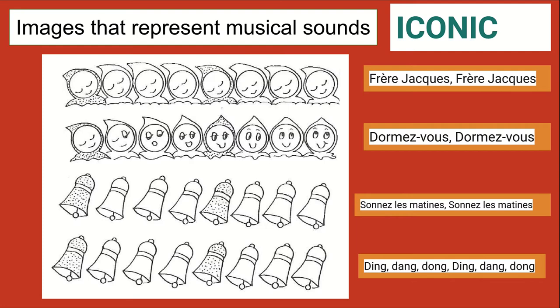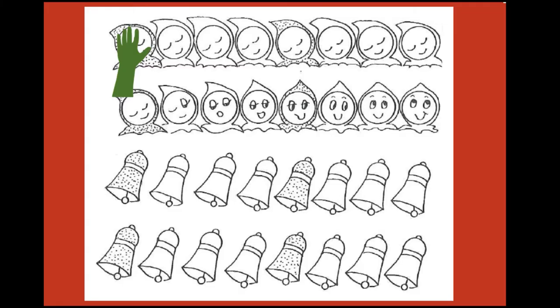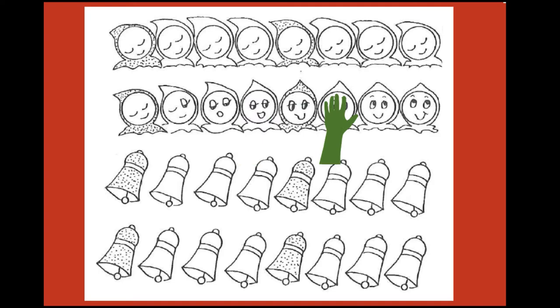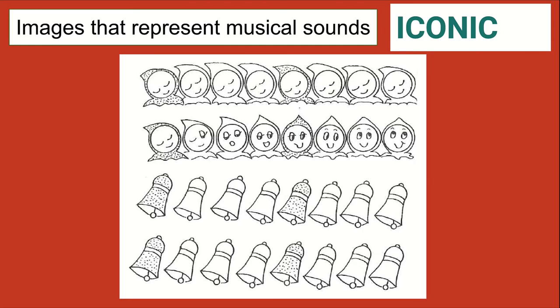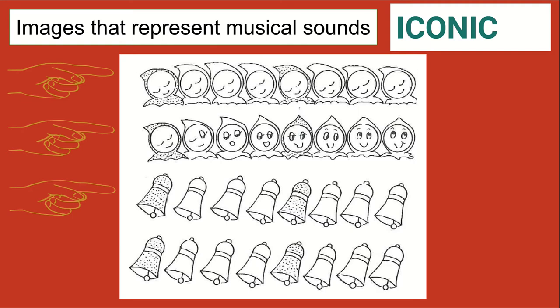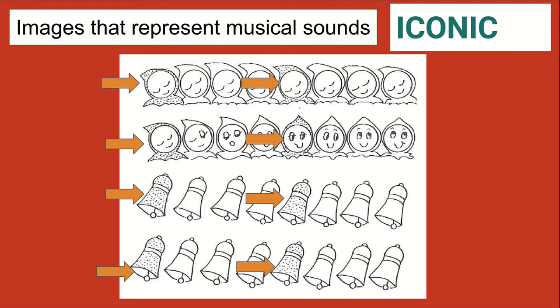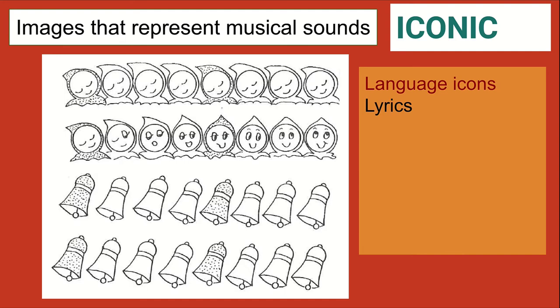What music concepts are represented by this song? You might have noticed there's an image for each beat of the song — Frère Jacques, Frère Jacques, dormez-vous, dormez-vous — so each image represents the beat. You may have also noticed an aspect of form: each line is a complete phrase of the song, and meter is identified by showing the downbeat with a change in how the images are colored. So there are language icons showing what the lyrics mean, and music icons representing beat, form, phrase, and meter.